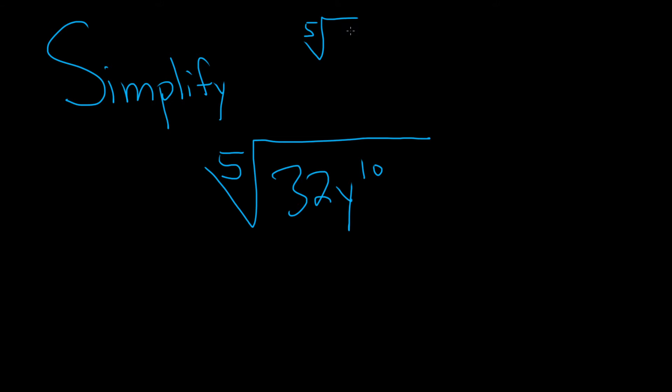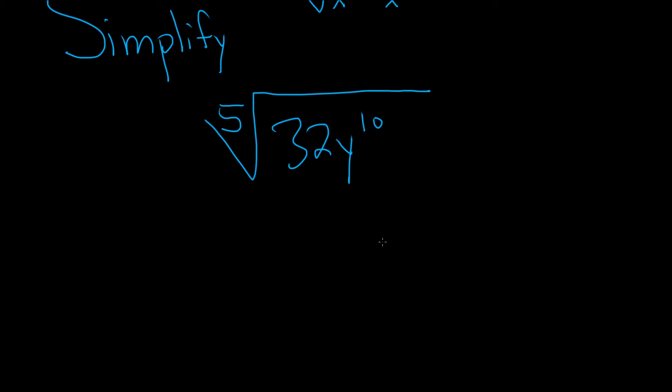Because if you take the fifth root of, say, x to the fifth power, you just get x. Also, just as a disclaimer, everything here in this problem is positive, so all variables are positive. However, it's not really going to make a difference in this particular case.